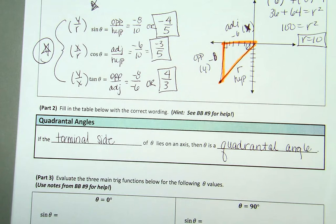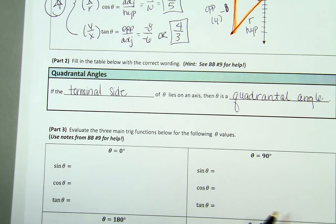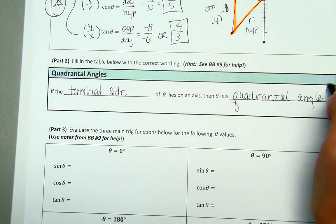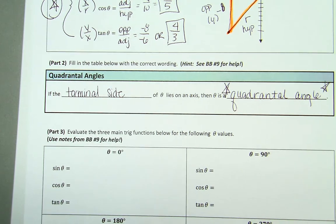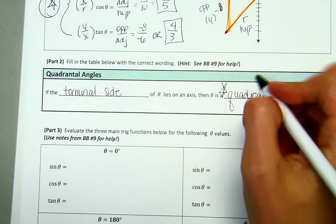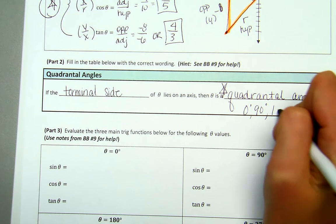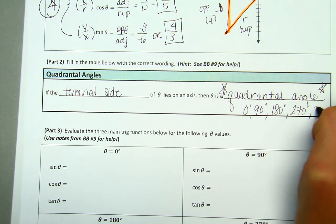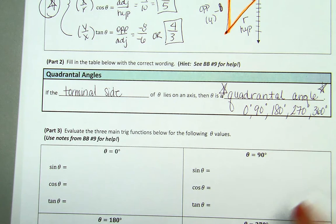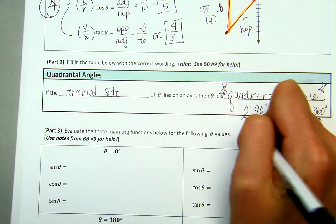If your terminal side of theta lies on an axis, then you're dealing with a quadrantal angle. We actually have five quadrantal angles, even though two of them are coterminal. Those angles are 0 degrees, 90 degrees, 180 degrees, 270 degrees, and 360 degrees — one full rotation around our coordinate plane. And 0 and 360 are coterminal.